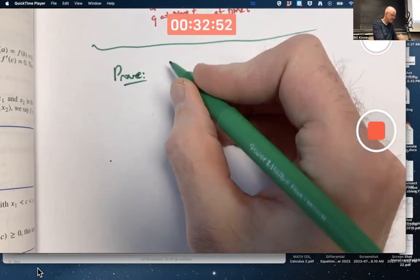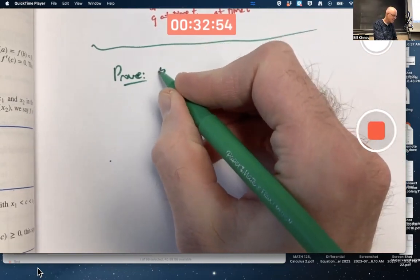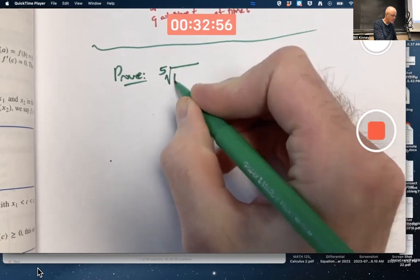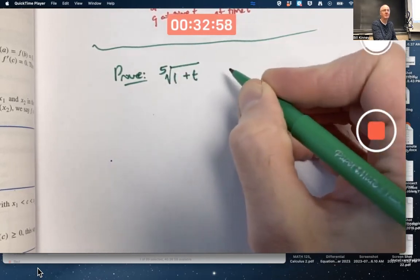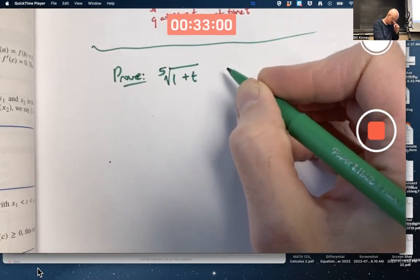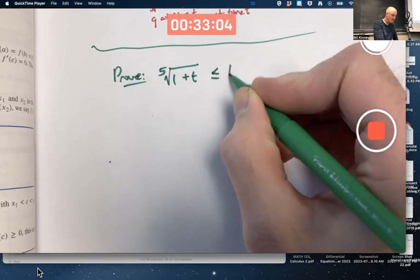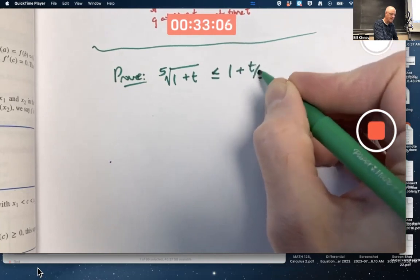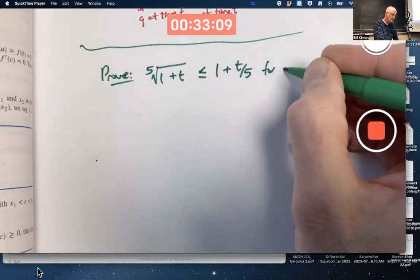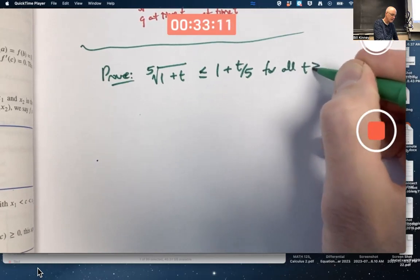Prove: the fifth root of (1+t) - I could use (1+x) but I'm using (1+t) - is less than or equal to 1 + t/5 for all t greater than or equal to zero.